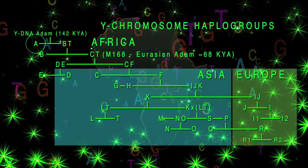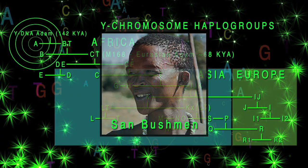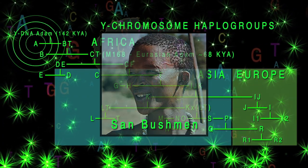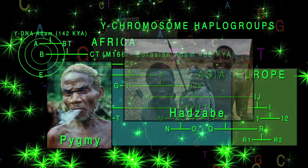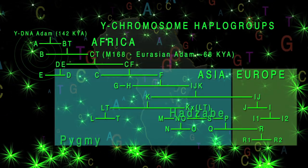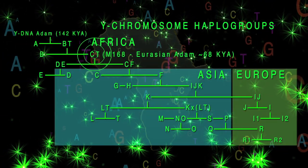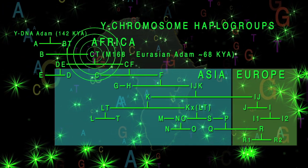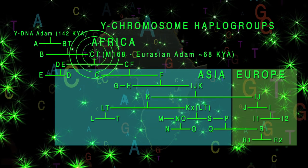Farthest back in time, we find haplogroup A in Africa, represented today by the Khoisan people. We also find haplogroup B, represented by the Pygmies and the Hadza peoples in Africa. The CT haplogroup comprises the haplogroups or subclades C through T, which occur largely outside of Africa.